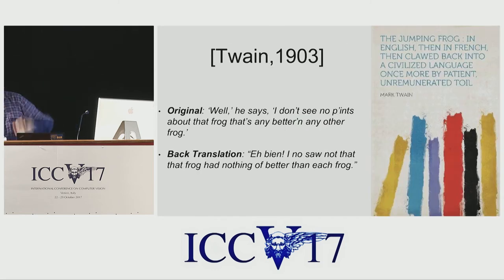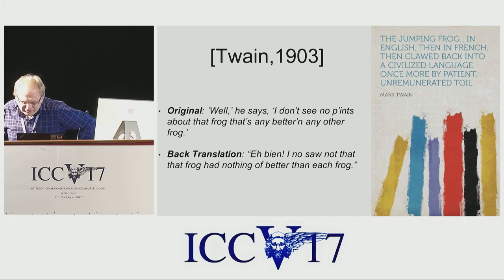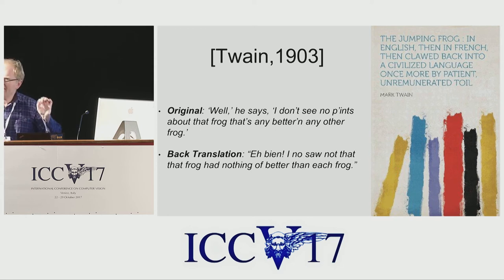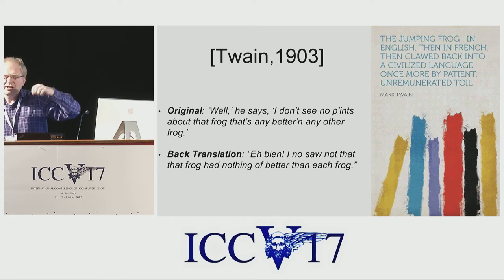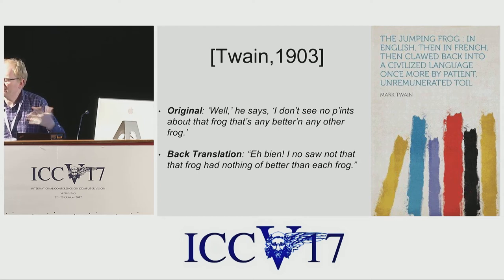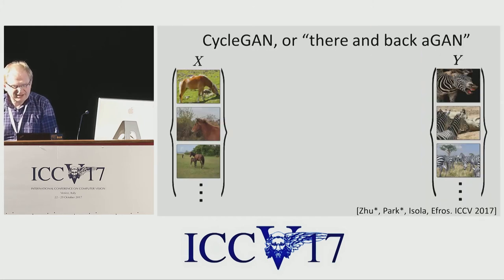Famously, this idea started with Mark Twain in 1903 — he wrote 'The Jumping Frog: in English, then in French, then clawed back into the civilized language once more by patient, unremunerated toil.' It's quite entertaining on the failures of translation. The point is that even when you do this cycle from one language to another, how do you know that the other language is actually French? In translation you can always evaluate whether the resulting text is correct French — that's a standard given. But in our case, we need to ensure the other domain is actually correct.